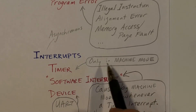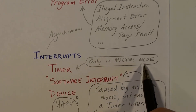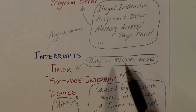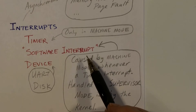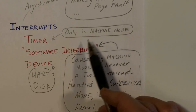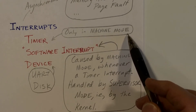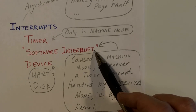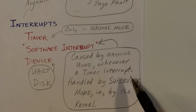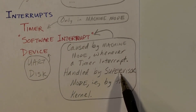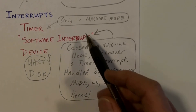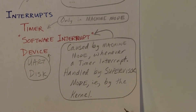The timer interrupt handler must run in machine mode. It can happen at any time, but the handler runs in machine mode. When a timer interrupt occurs, the handler running in machine mode needs to notify the kernel, so it causes a software interrupt at the supervisor level. That software interrupt is then handled by code running in supervisor mode — the kernel has an interrupt handler for the software interrupt that does what's needed for a timer interrupt.